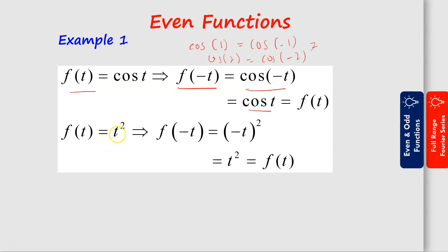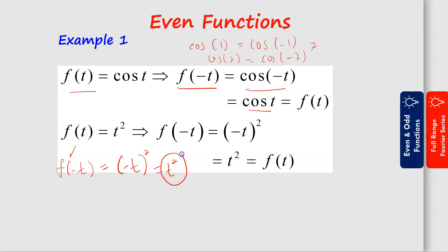For example, if we have f(t) equal to t squared, if I change t to negative t I have f(-t) equal to (-t) squared which equals t squared. This is the same as f(t), so we can say that this function is an even function.